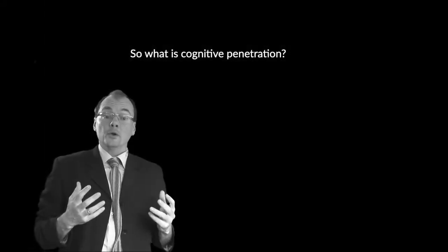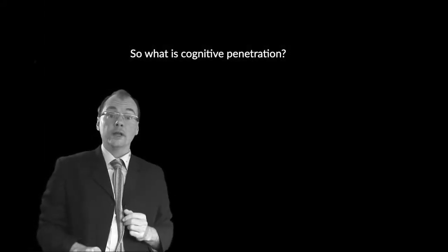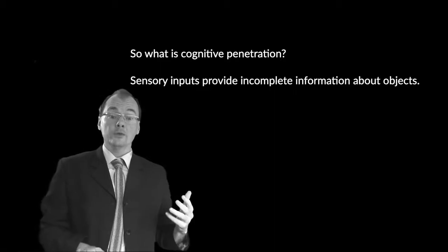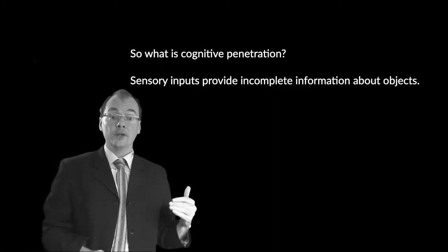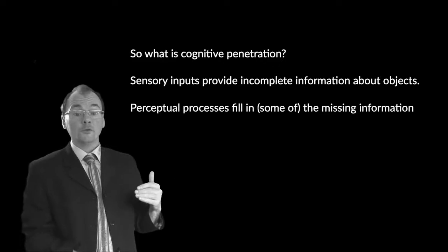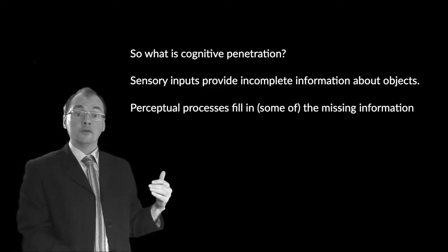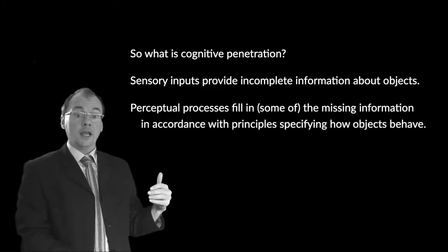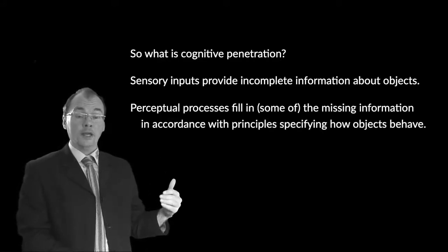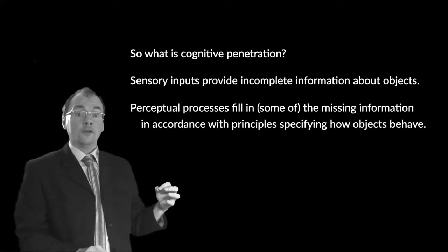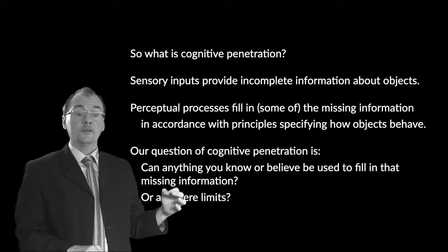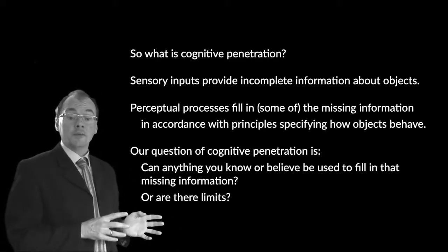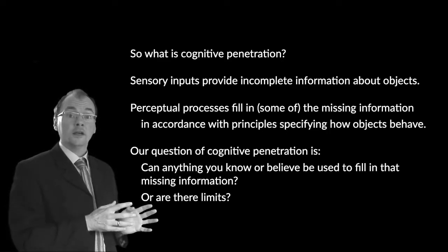Not anything you believe or know can be what influences the background theory, which together with the sensory information gives rise to object tracking. So this question here is really the question of cognitive penetration. So to sum up, what is cognitive penetration? My suggestion is this. Sensory inputs provide incomplete information about objects. Perceptual processes fill in some of that missing information in accordance with principles specifying how objects behave. Our question of cognitive penetration is this. Can anything at all that you know or believe be used to fill in that missing information? Or are there limits?